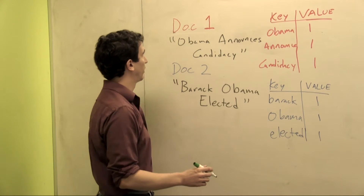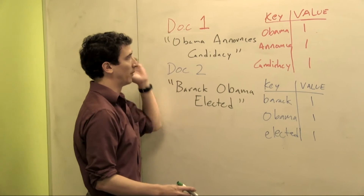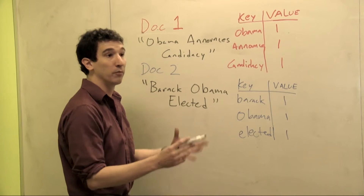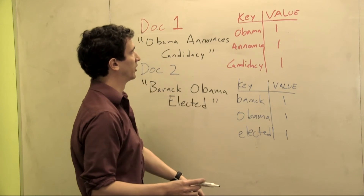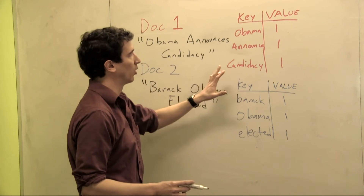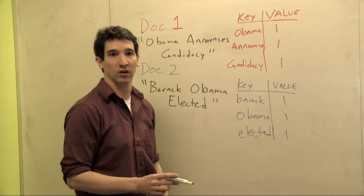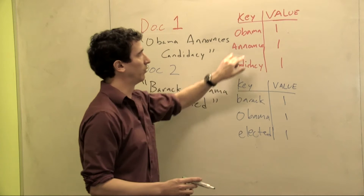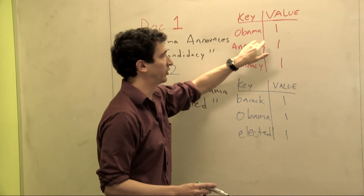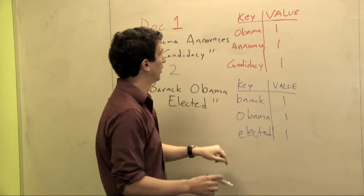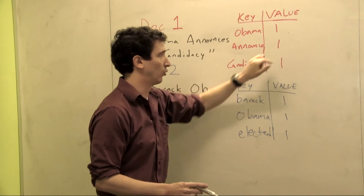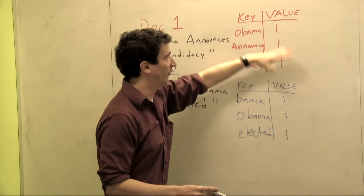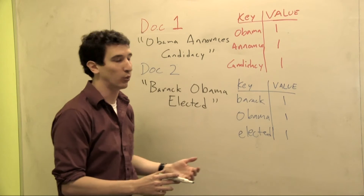We can start with a document that says 'Obama announces candidacy,' and we can turn that into a representation of that document — an imperfect representation that just says, let's keep track of every word and the number of times that word appeared. So we go through and say Obama hashes to one, announces hashes to one, and candidacy hashes to one. For longer documents, these values would grow and the number of elements in the hash table would grow as well.